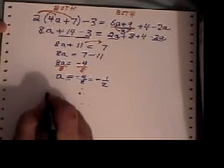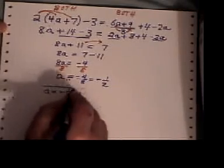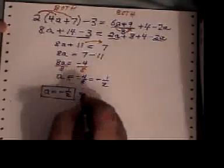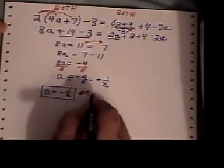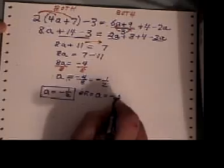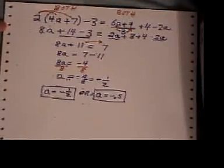So, your final answer, Regis, is a is negative 1 over 2. Nice box around your answer. Or, you could say a equals negative decimal 5 if you wanted to use decimal points.